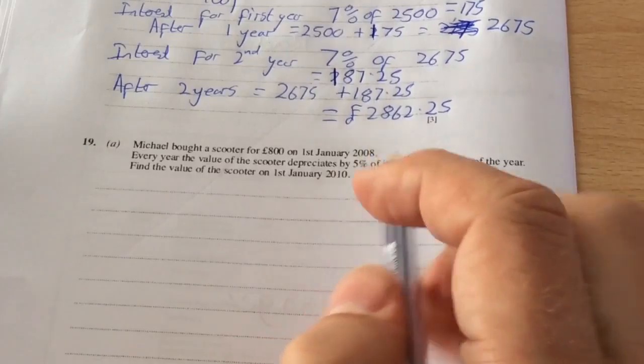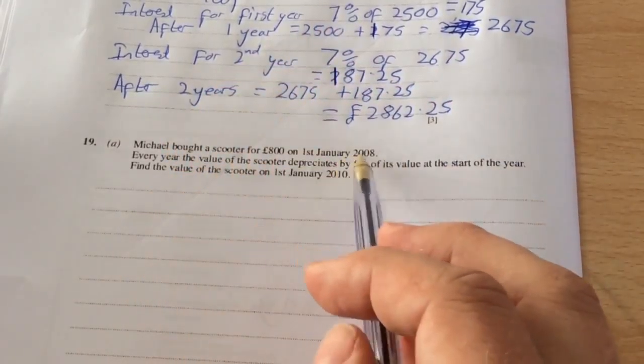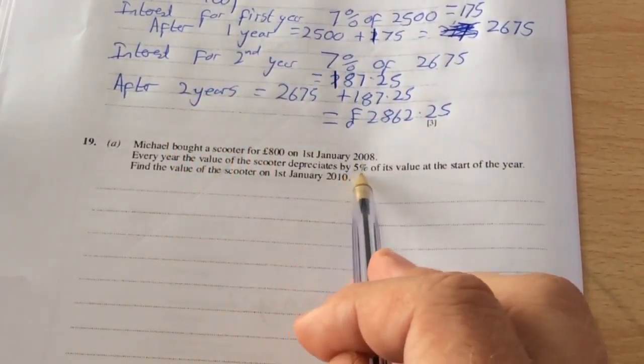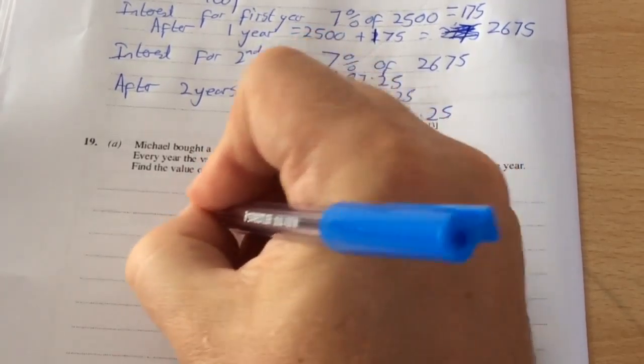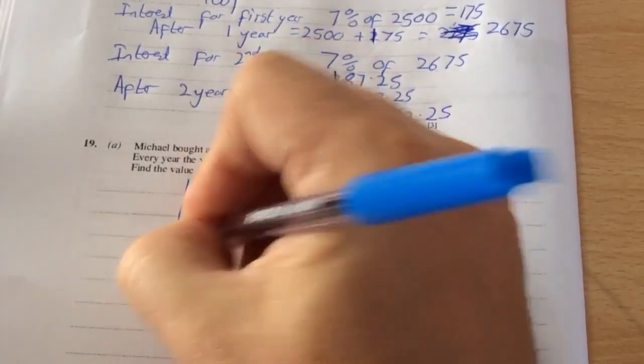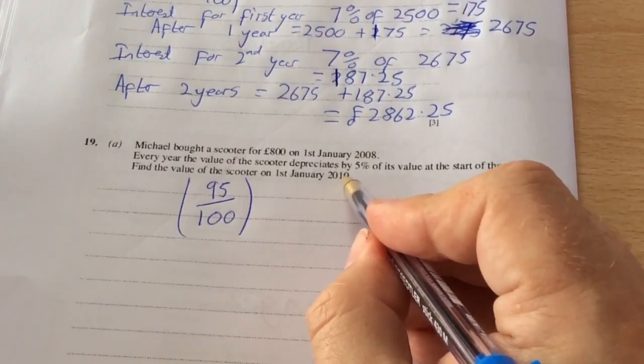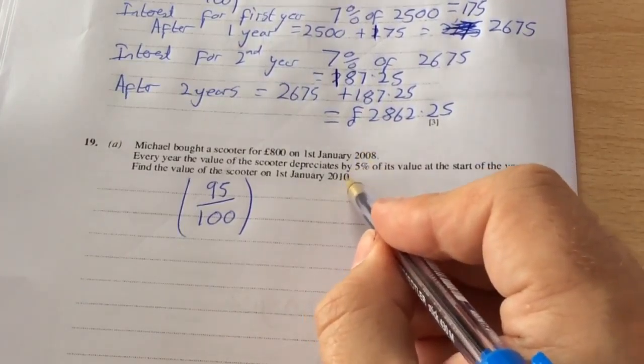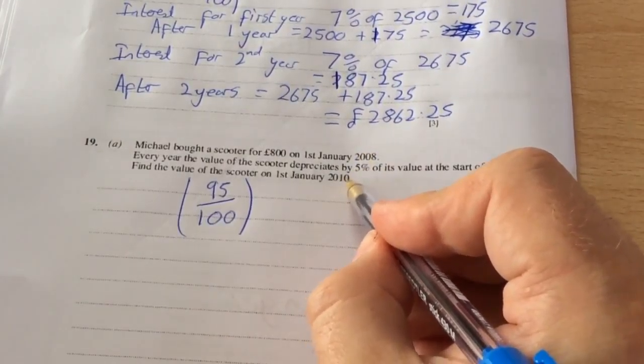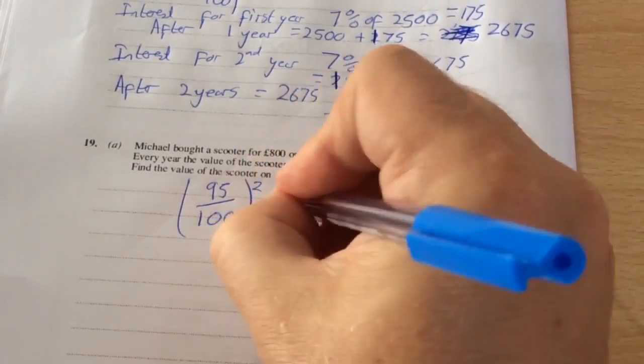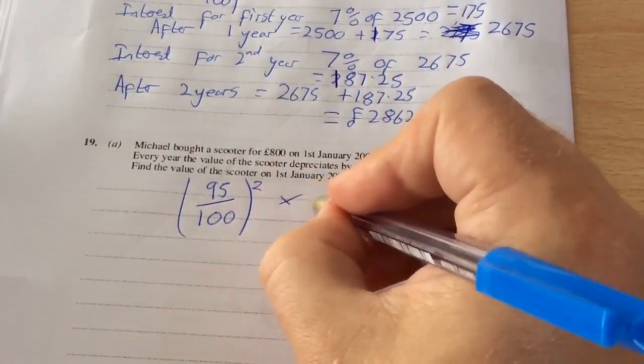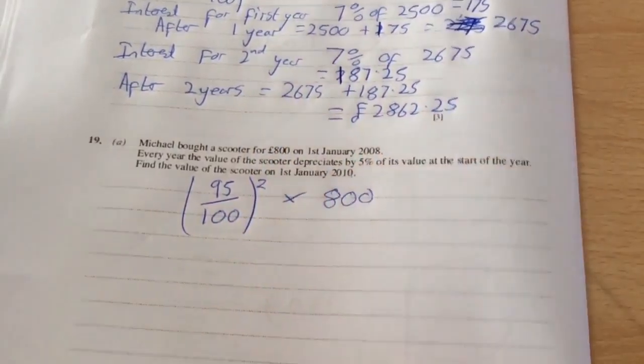If I was using this as the formula, 100% depreciates, take away 5% is 95. So it becomes 95 divided by 100 to the power of the number of years, which from 2008, you've got 2009 and then 2010, is two. And multiply by the original amount, £800.